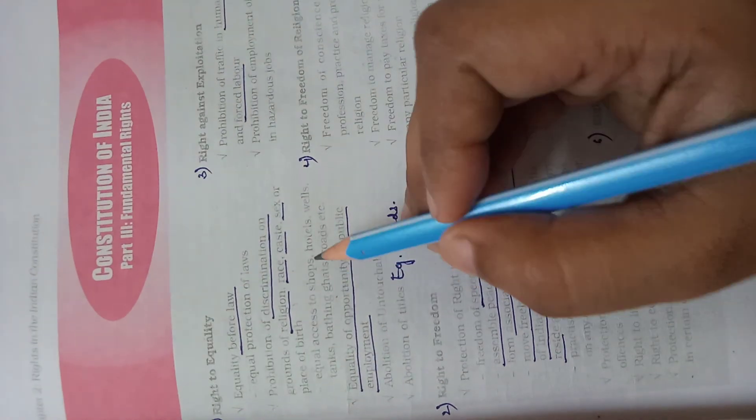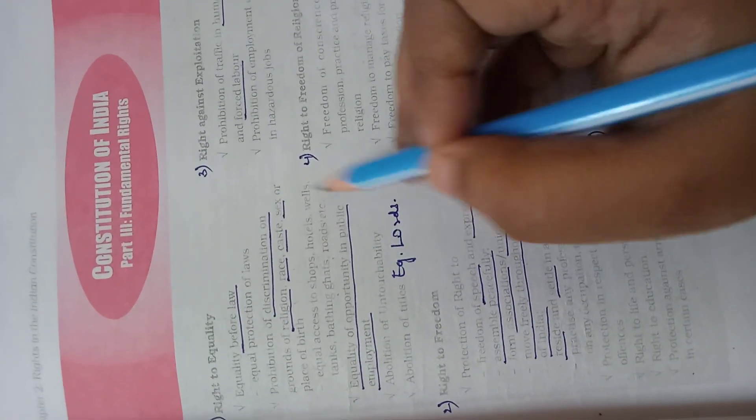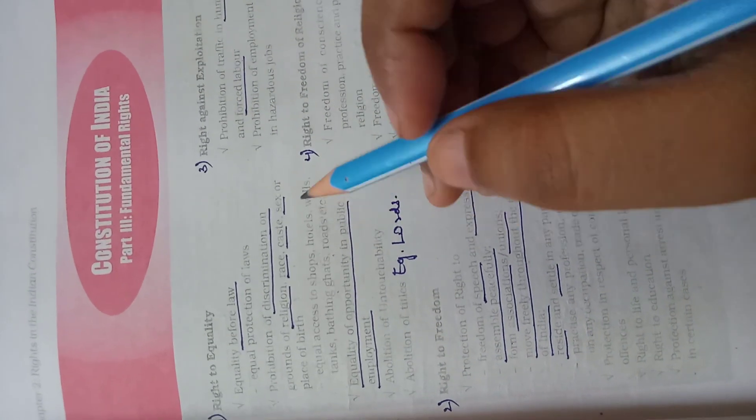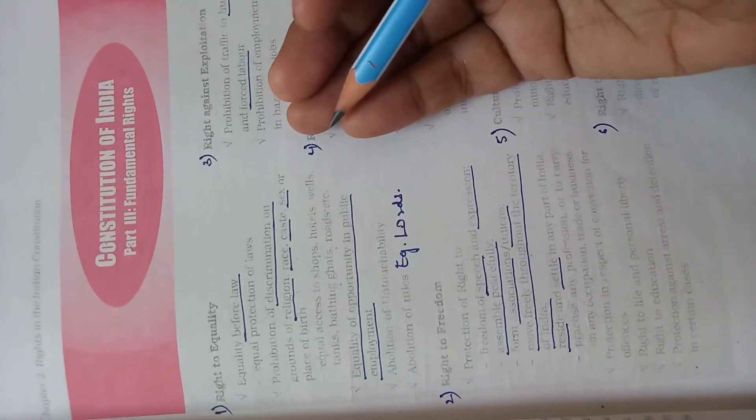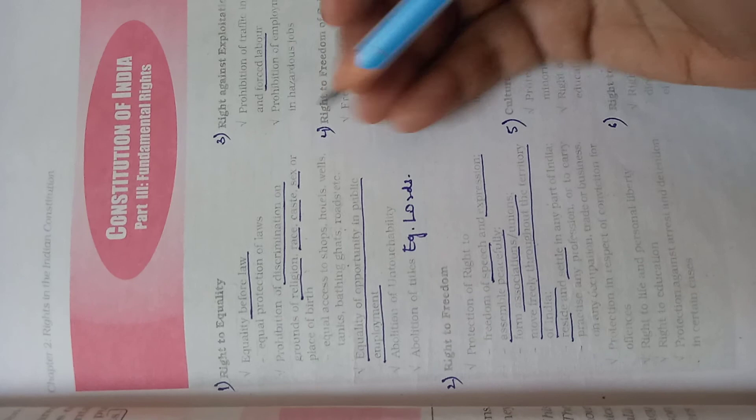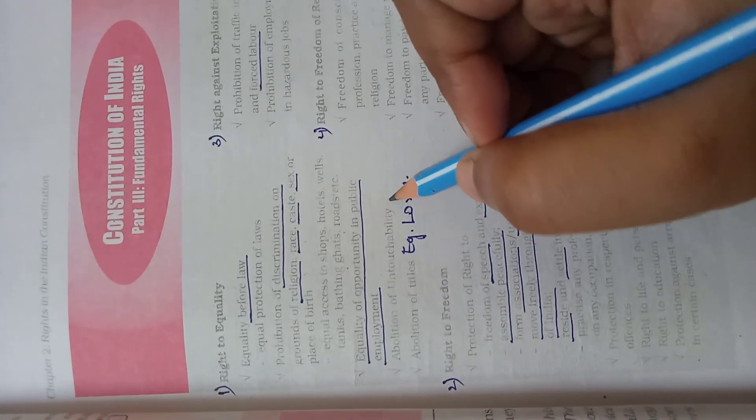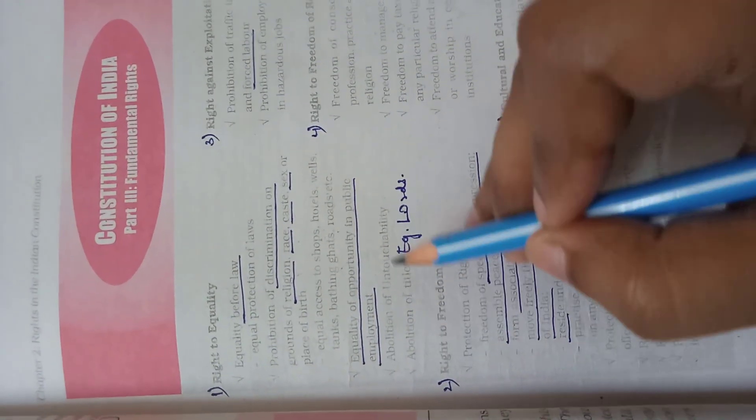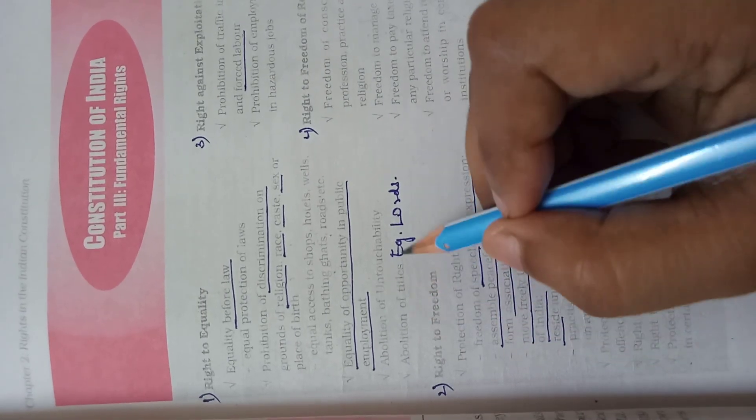When they are saying shops, hotels, tanks, they are trying to say everything which comes in the public domain - buses, public transport, metro. In any regard, you cannot have discrimination among people. Then abolition of untouchability - the practice which was earlier prevalent has been abolished according to right to equality.